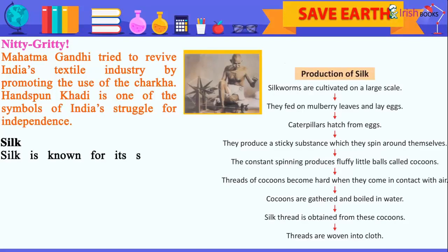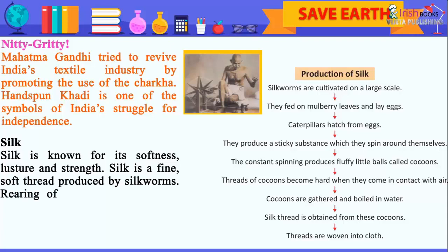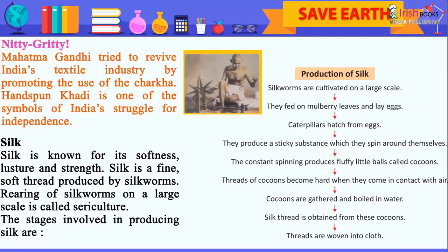Silk is known for its softness, luster and strength. Silk is a fine, soft thread produced by silkworms. Rearing of silkworms on a large scale is called sericulture. The stages involved in producing silk are: silkworms are cultivated on a large scale, they are fed on mulberry leaves and lay eggs. Caterpillars hatch from eggs and produce a sticky substance which they spin around themselves, producing fluffy little balls called cocoons. Threads of cocoons become hard when they come in contact with air. Cocoons are gathered and boiled in water, and silk thread is obtained from these cocoons. Threads are then woven into cloth.